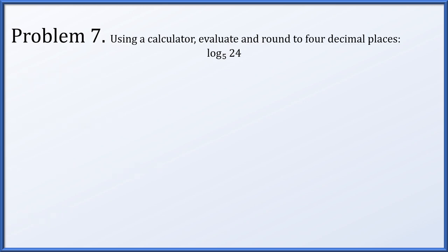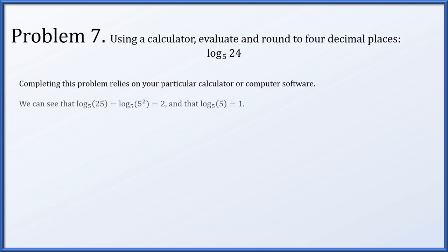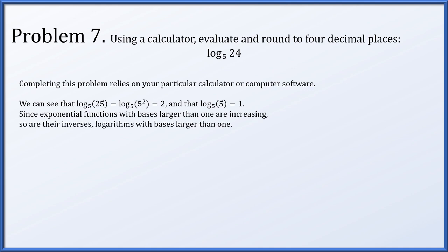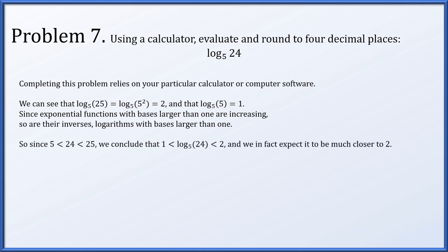Problem 7: using a calculator, calculate and round to four decimal places the logarithm base 5 of 24. Before plugging in, note that the log base 5 of 25 is 2 and the log base 5 of 5 is 1. Since exponential functions with bases larger than 1 are increasing and so are their inverse logarithms, and since 24 lies between 5 and 25, the result will lie between 1 and 2. Since 24 is significantly closer to 25, we expect a result close to but just below 2. Plugging into a computer, we get 1.9746.